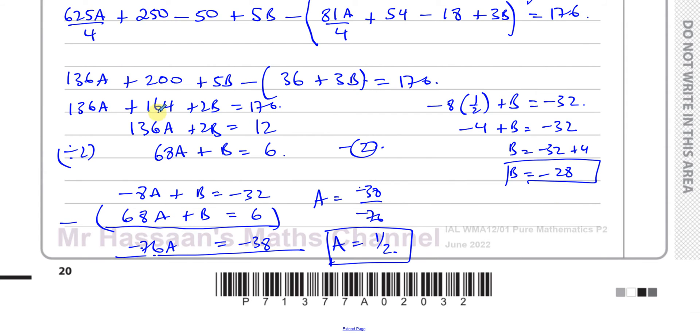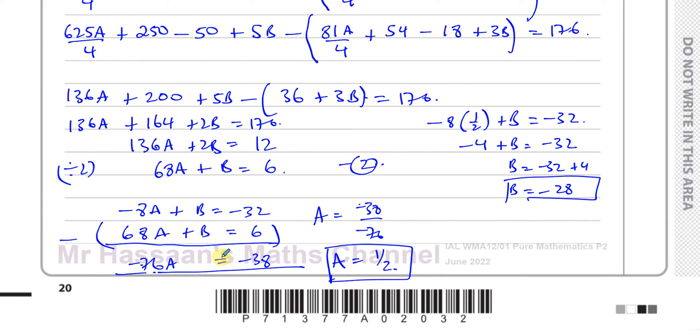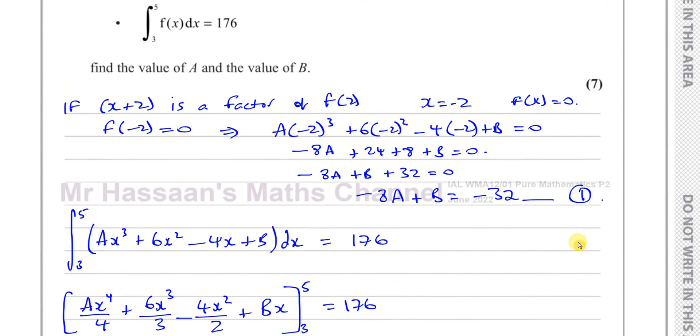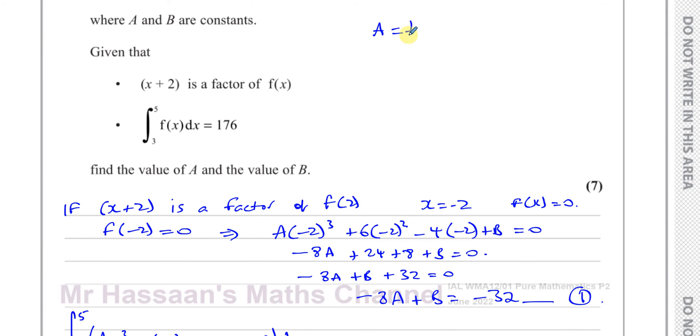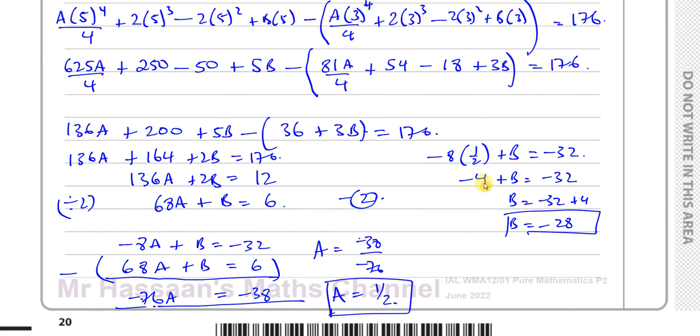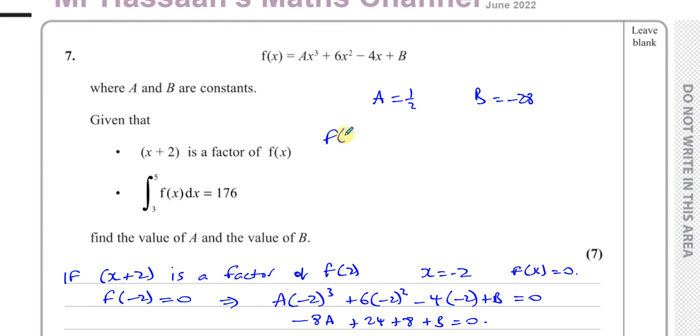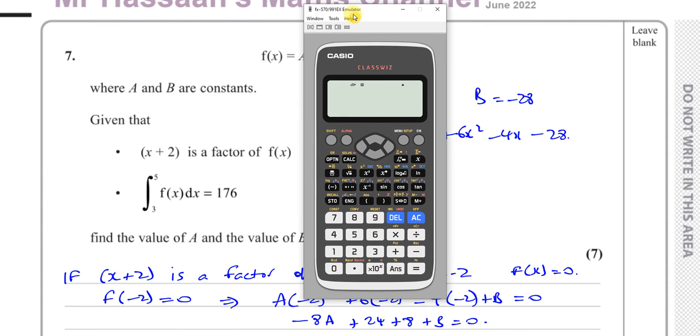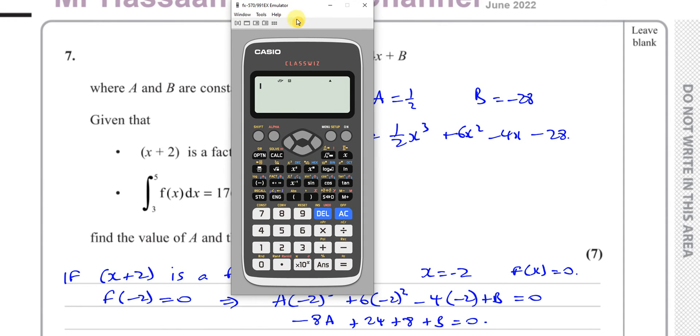Now supposing we weren't sure, like we made a few mistakes on the way as we saw, or silly mistakes that we worked out that there were mistakes as we were going along. But supposing in the exam you got an answer and you want to make sure that it's correct, and you don't have a mark scheme in the exam. I don't have the mark scheme right now because it hasn't been released at the time I made this video. So a equals a half, b equals -28. I'll show you how we can check the answer.